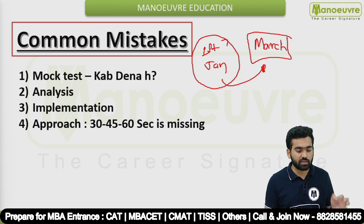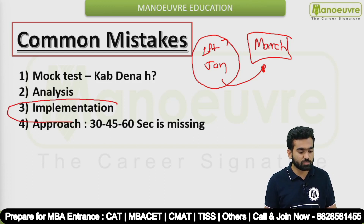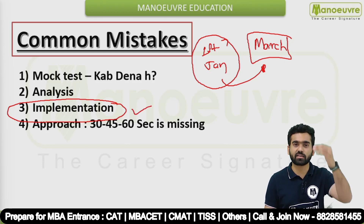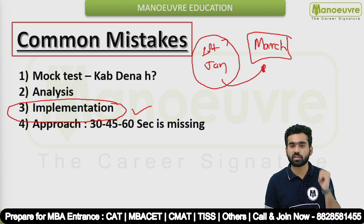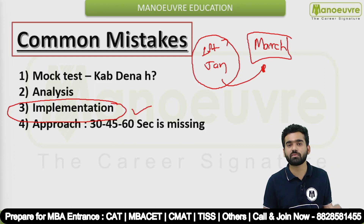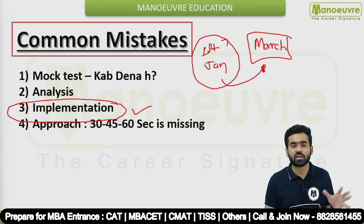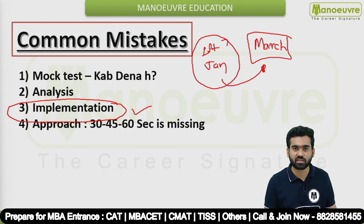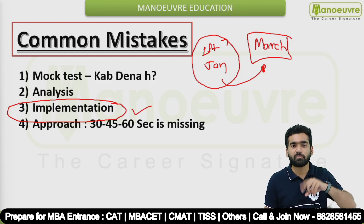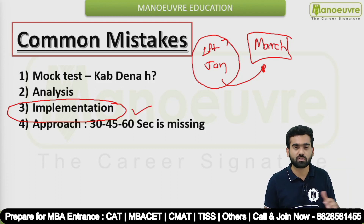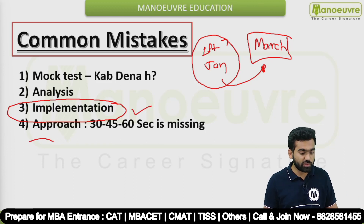The second common mistake is that implementation is missed. Most of the time students set a big target - they give a mock and realize their areas of weakness, but then implementation khatam - it never happens. This is the common mistake done by every student.